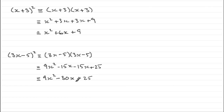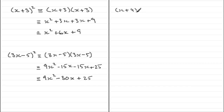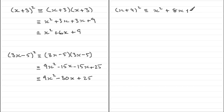With that idea we should be able to go straight to the answers. So if we had x plus 4 all squared: we square the first term to get x squared, then twice the product — the product is x times 4 which is 4x, doubled gives plus 8x — and then 4 squared which is plus 16.